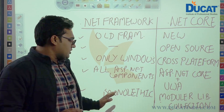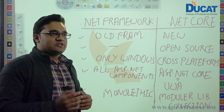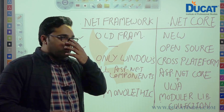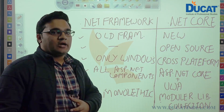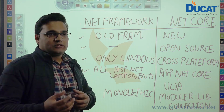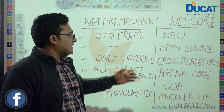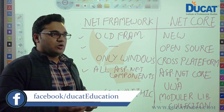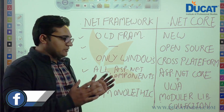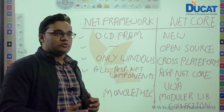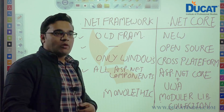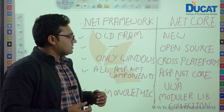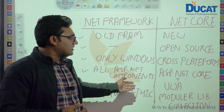.NET Framework was monolithic — whenever publishing any application, the whole complete framework library had to be deployed on the client side. But in .NET Core it's a modular library collection, where the framework library is divided into multiple modules. Based on our requirements, we can use only those libraries needed to develop our application. This is also a major difference between the two.